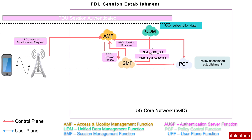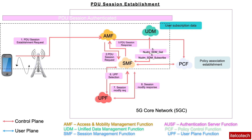The SMF then selects one or more UPFs depending upon the requirement. For a PDU session of type IPv4 or IPv6, the SMF allocates an IP address — so the SMF is the entity that allocates the IP address. An N4 session establishment or modification request is then passed from the SMF to the UPF, installing enforcement rules and reporting rules for this PDU session. The UPF acknowledges with an N4 message confirming the session has been established and modified.